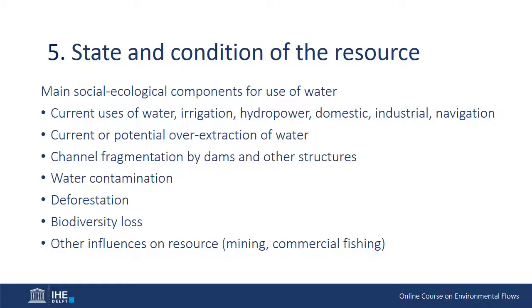This may include things such as overfishing. Regardless of the flow regime you put in place, fish populations will probably not reach their set targets, and it's very important to know this and to be able to explicitly state it.